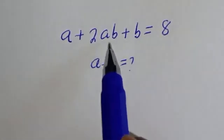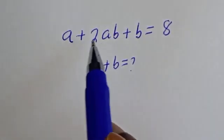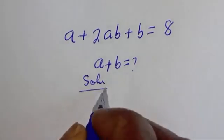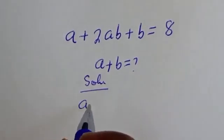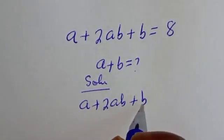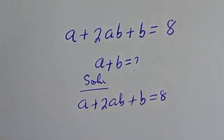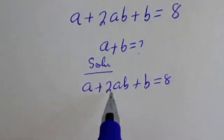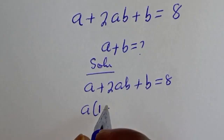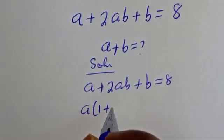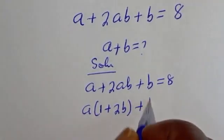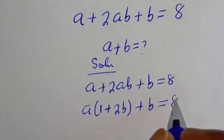How to solve for a plus b from this given math problem: a plus 2ab plus b is equal to 8. We have a plus 2ab plus b is equal to 8. If you look at these two, a is common — let's bring it out: a bracket 1 plus 2b plus b is equal to 8.